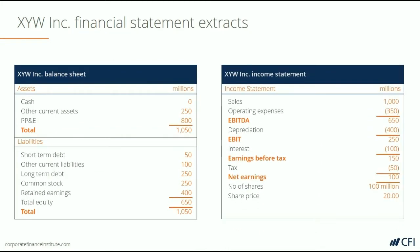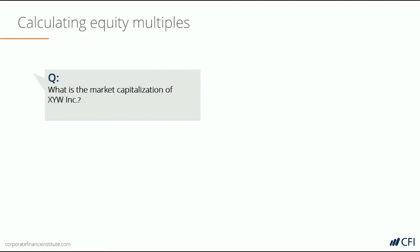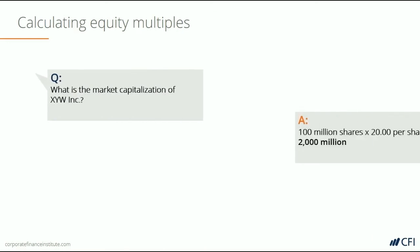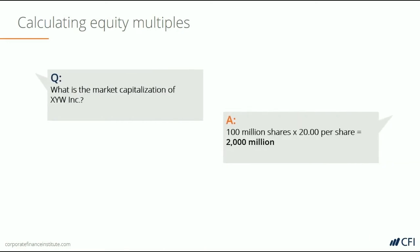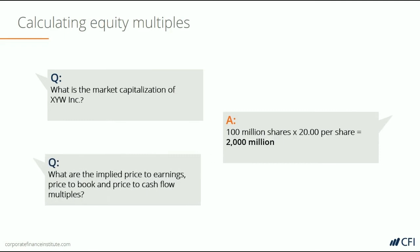Now we're going to calculate the P/E ratio. The first thing we need to do is figure out the market cap. If we take 100 million shares and multiply them by $20 a share, we get a $2 billion market cap.